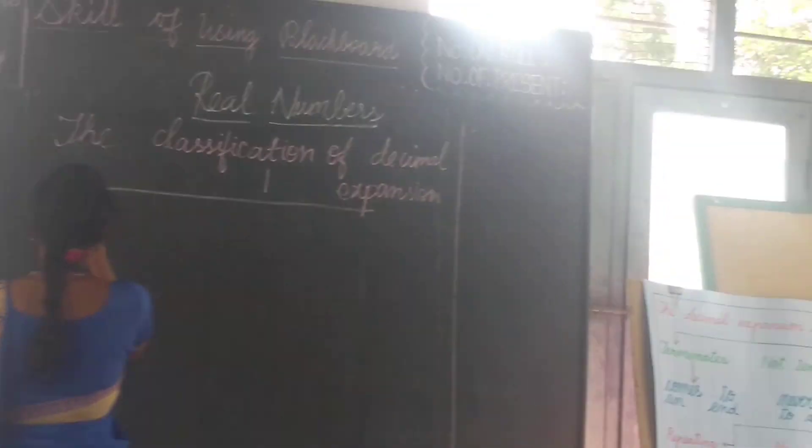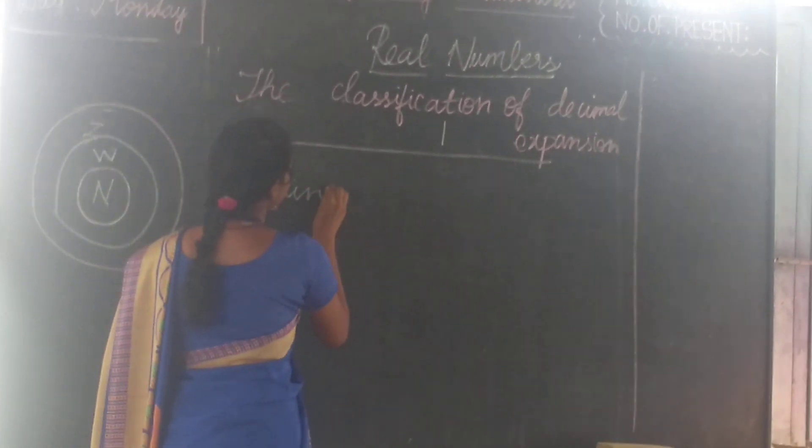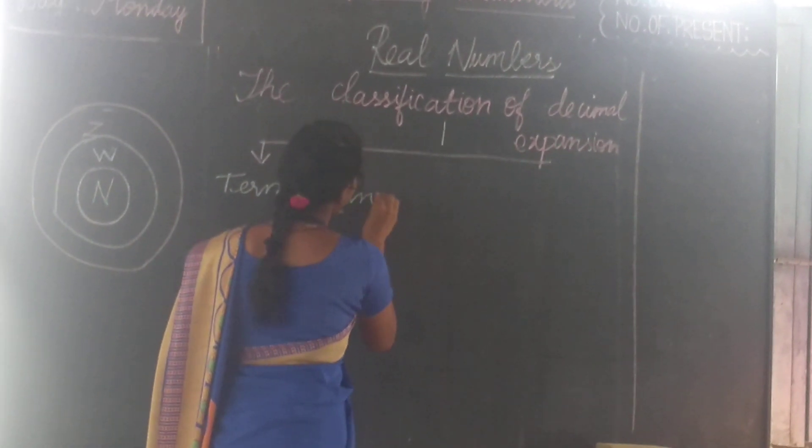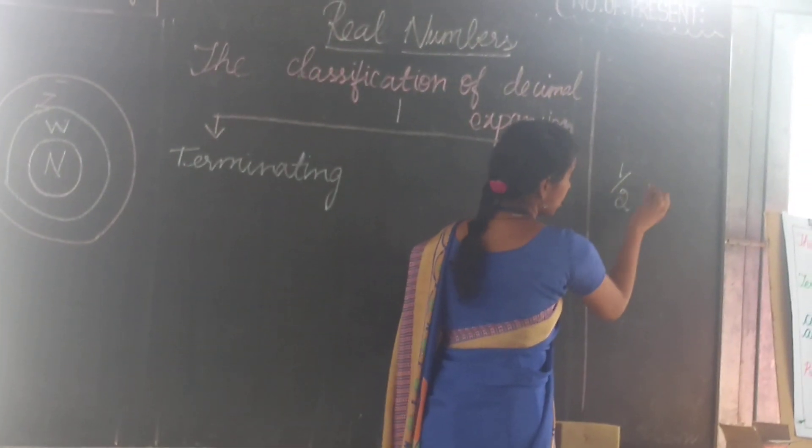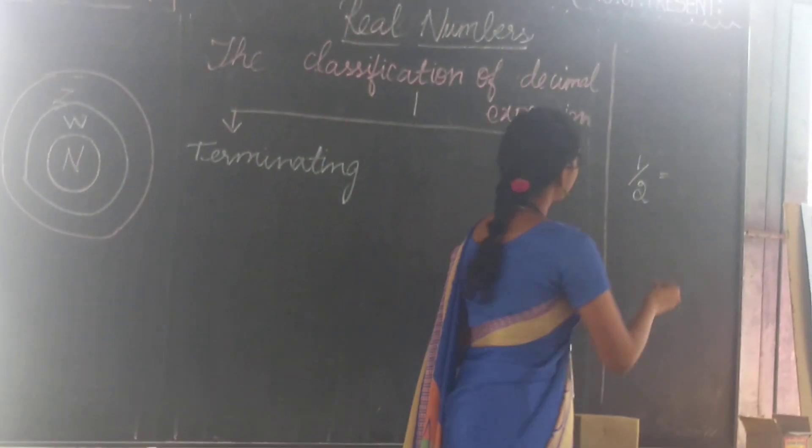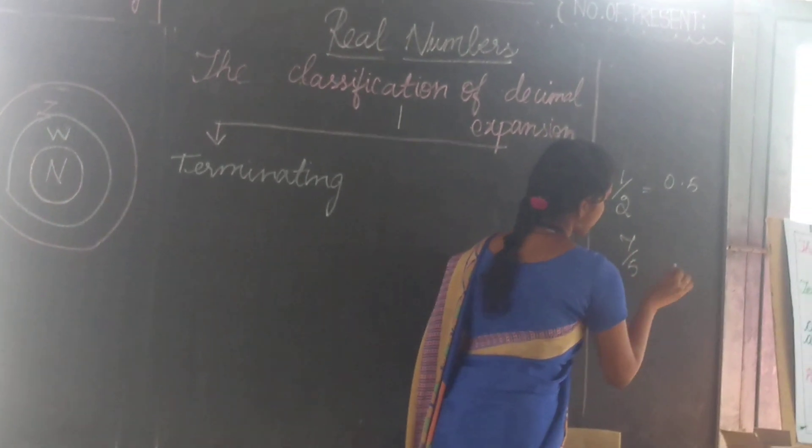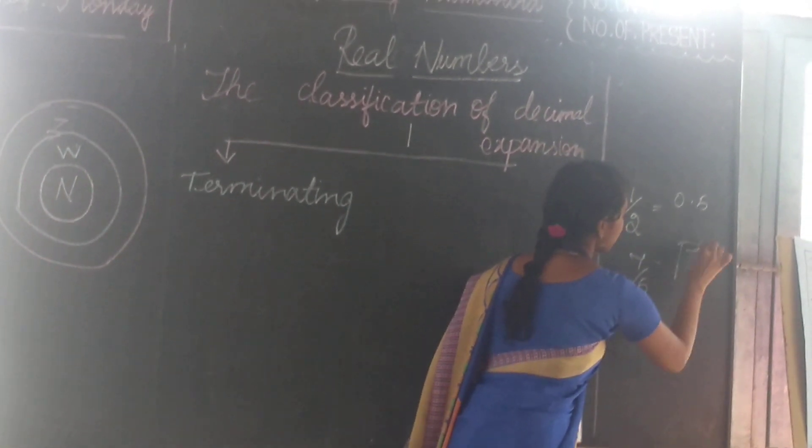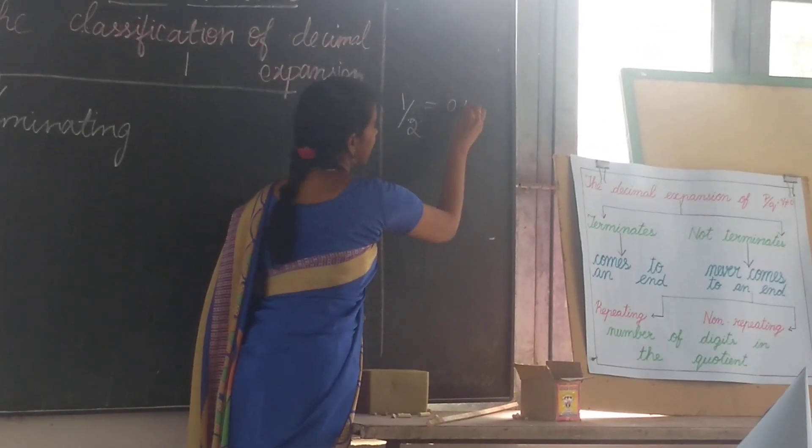So first, terminating. See, I give an example. For example, if we divide 1 by 2, what we get? 0.5. Yes, 0.5. If I divide 7 by 5, see I divide 7 by 5. 1 times 5 is 5, 2. 0.5.